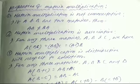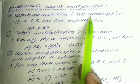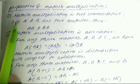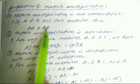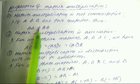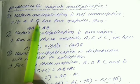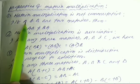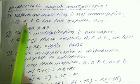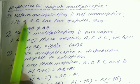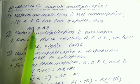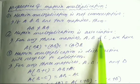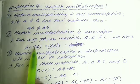Properties of matrix multiplication: Matrix multiplication is NOT commutative. If A and B are two matrices, then A·B is not equal to B·A in general. Also, matrix multiplication IS associative: for any three matrices A, B, C, we have A·(B·C) = (A·B)·C.